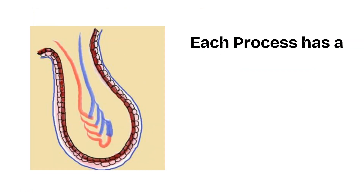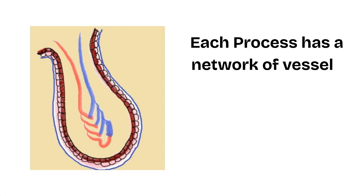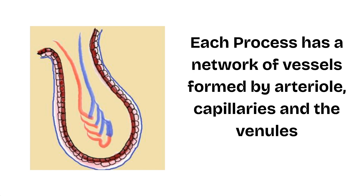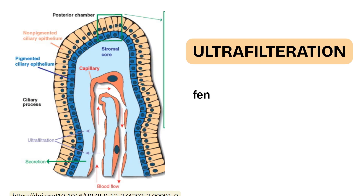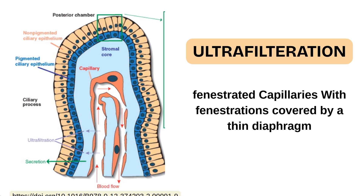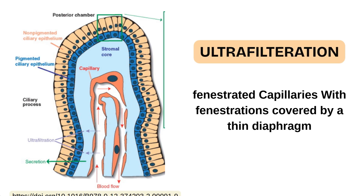Each ciliary process contains a vascular network, i.e. one arteriole and one venule, and connecting these two will be the capillaries. The capillaries here are fenestrated and are covered by a thin diaphragm which allows a process known as ultrafiltration.